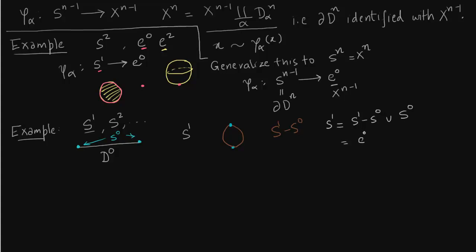So S^1 minus S^0 is two arcs. So it is e^1 union e^1 that is two 1-cells. And S^0 we have seen is just two 0-cells.